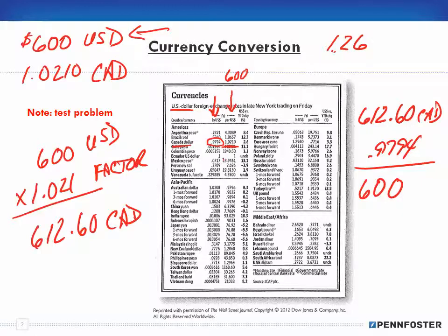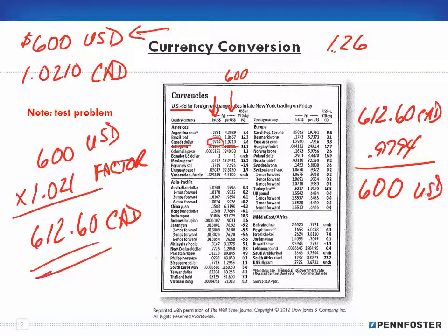The second column is when you're going from US dollars to a foreign currency; you use the first column when going from foreign currency back to US dollars. Be aware that if you go from US dollars to Canadian dollars you get $612.60, but when you convert $612.60 back to US dollars, just due to rounding issues, it won't come out to exactly $600 — in this case it was $599.98.